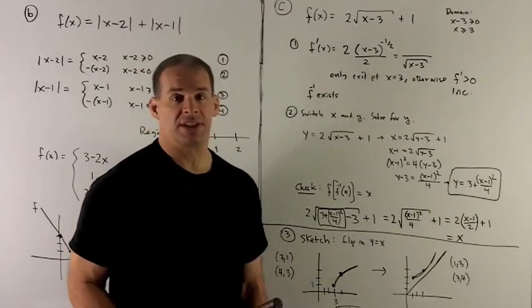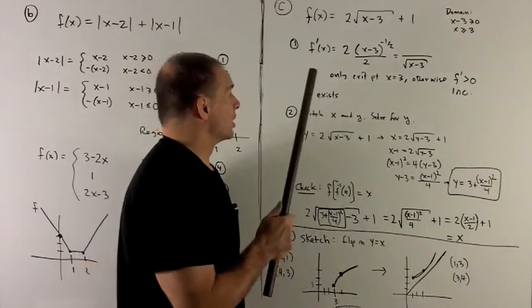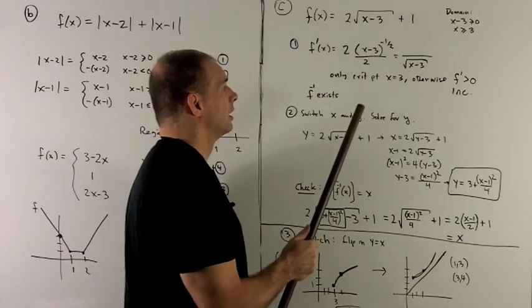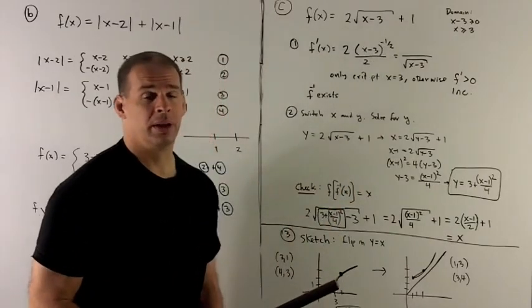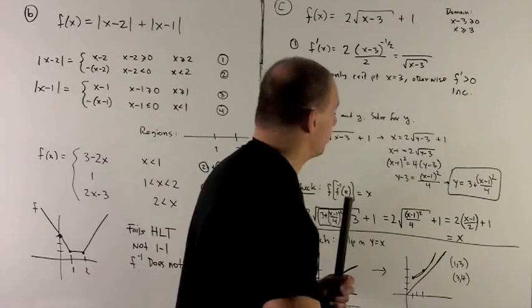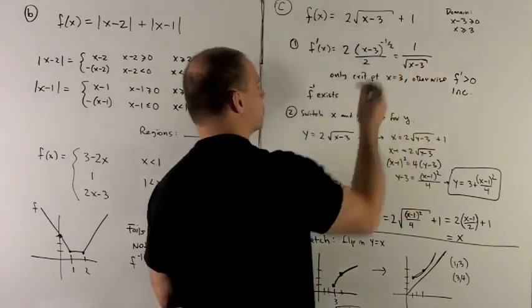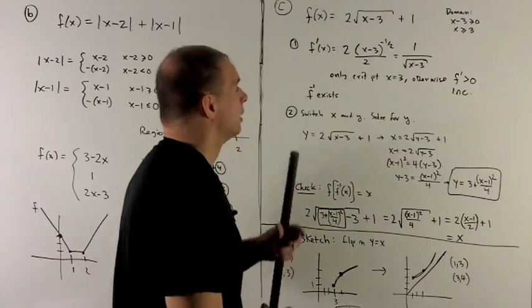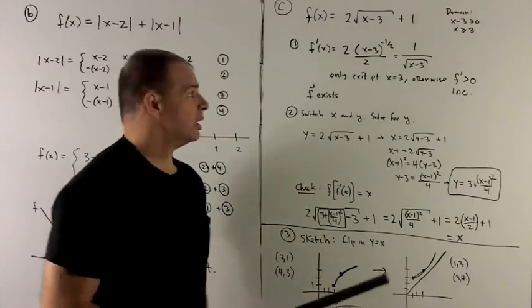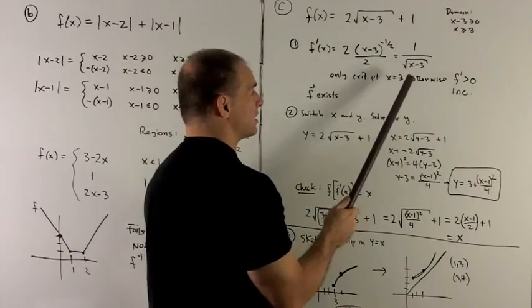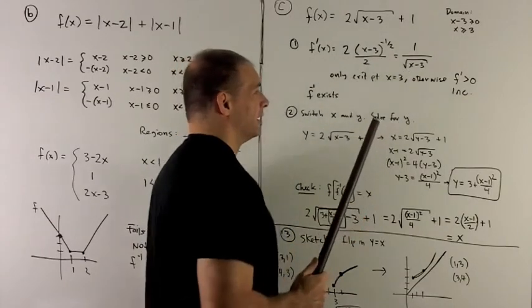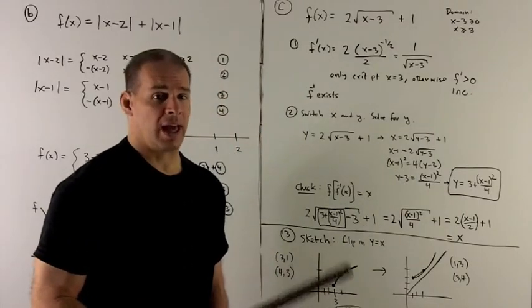To see if f inverse exists, I'm going to check the derivative. So this is just (x minus 3) to the 1 half. We bring the 1 half down, and then we subtract 1 off the exponent, and then take the derivative to the inside for the chain rule. But that's only going to be a 1, so it doesn't really affect this. That's going to mean we're looking at derivative. Minus 1 half means we can put that thing in the bottom. So I have 1 over the square root of (x minus 3). The square root of anything always returns a positive number. So this is always going to be positive, except at 3 in our domain where it blows up. But that's fine. Everywhere else, this is going to be increasing, so we'll have an inverse function.